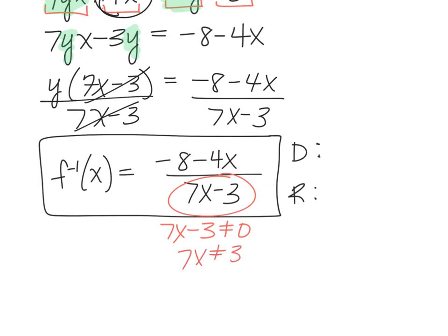So 7x cannot equal 3, and if I divide by 7, x cannot equal 3 sevenths. So my domain for the inverse will be all numbers except for 3 sevenths. So negative infinity to 3 sevenths, union 3 sevenths to infinity.